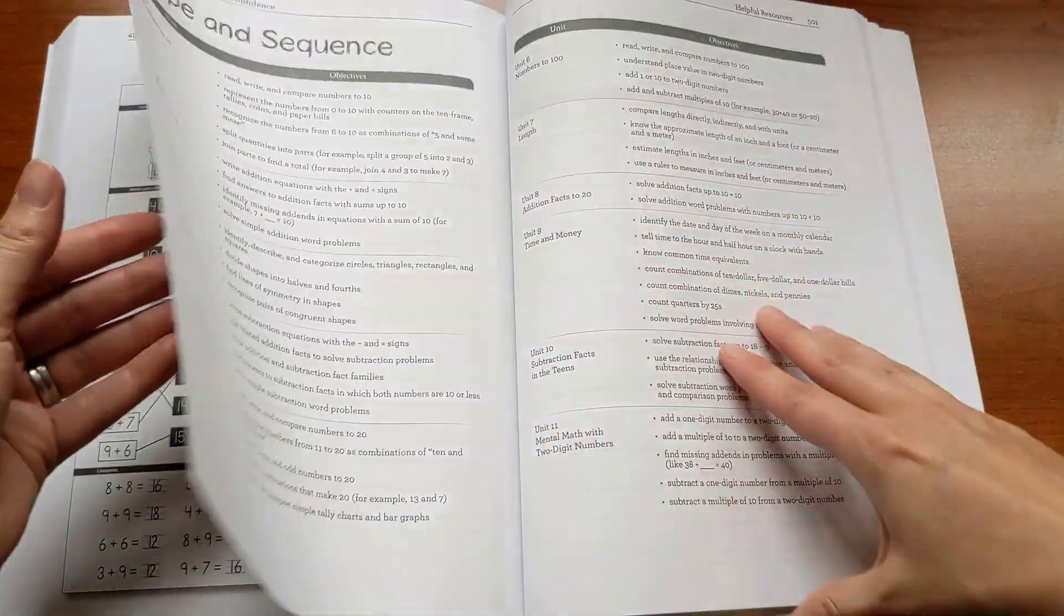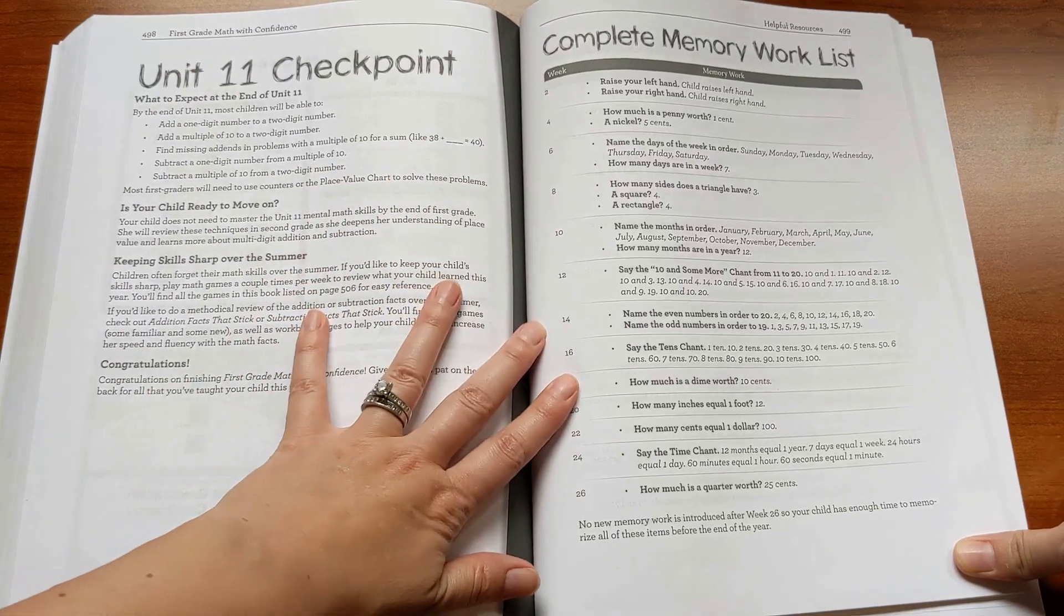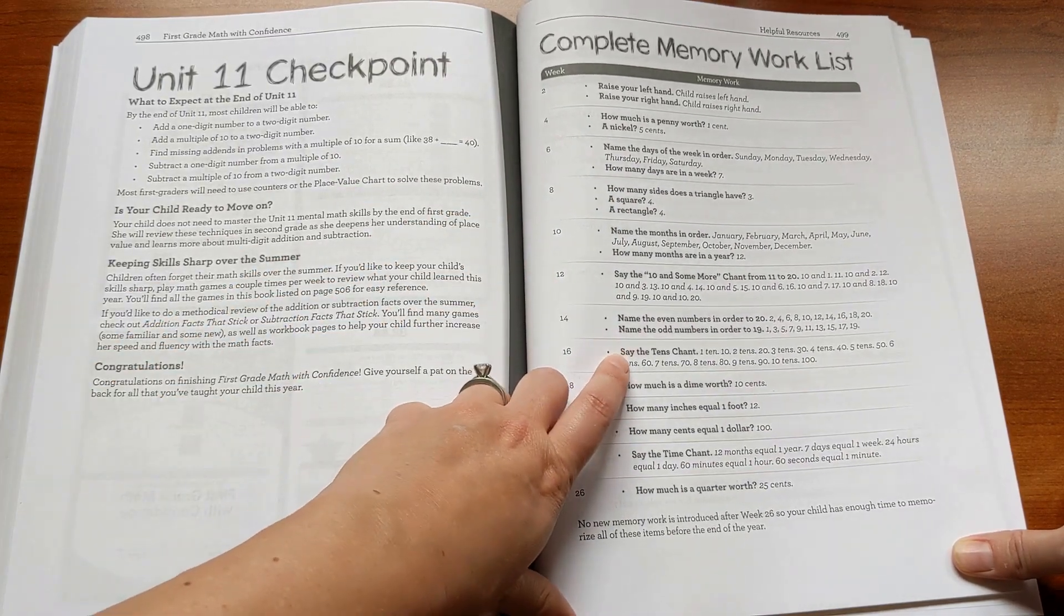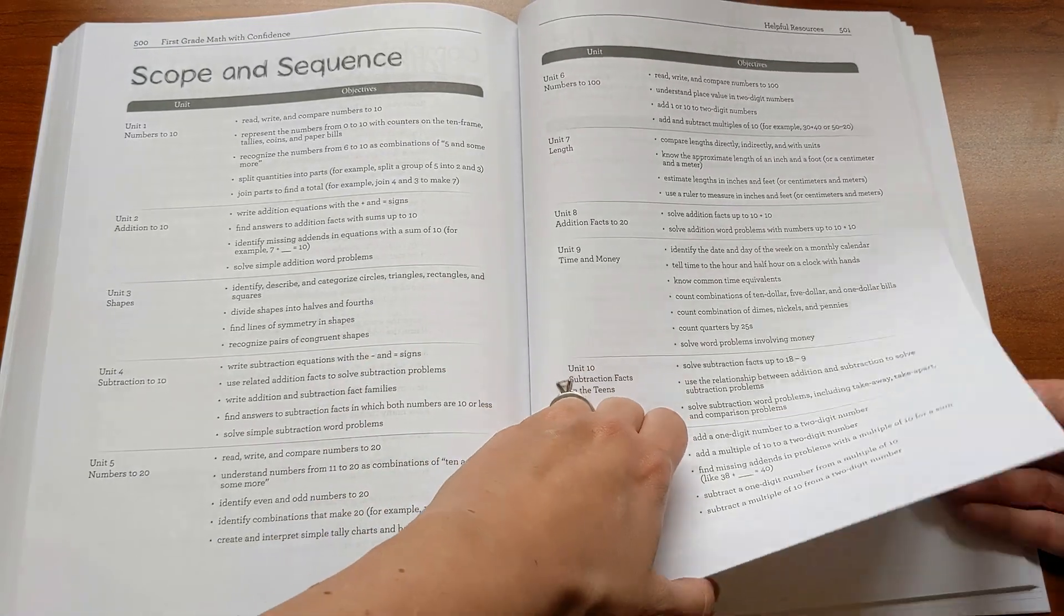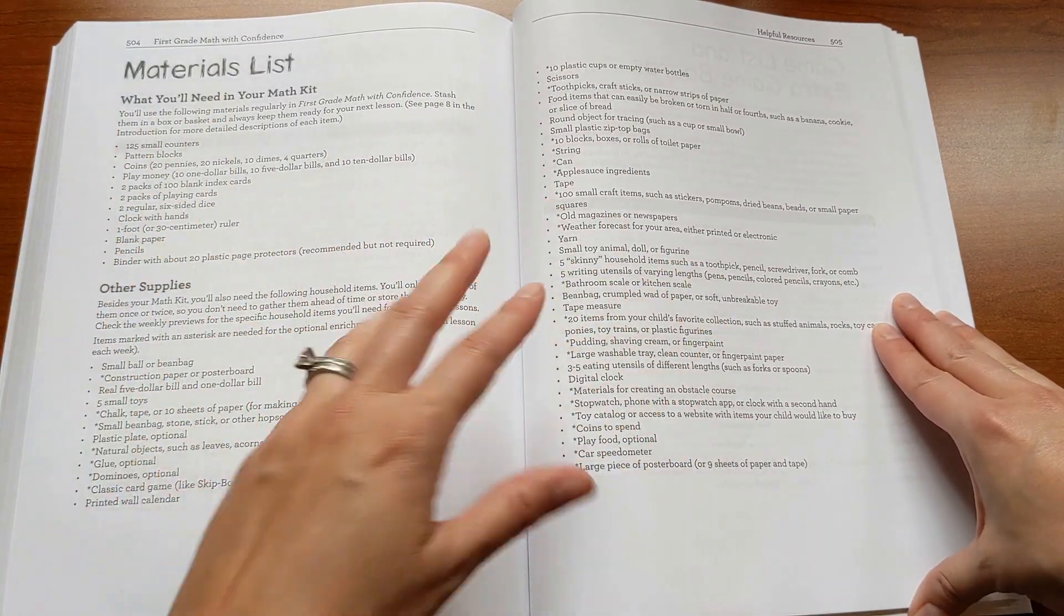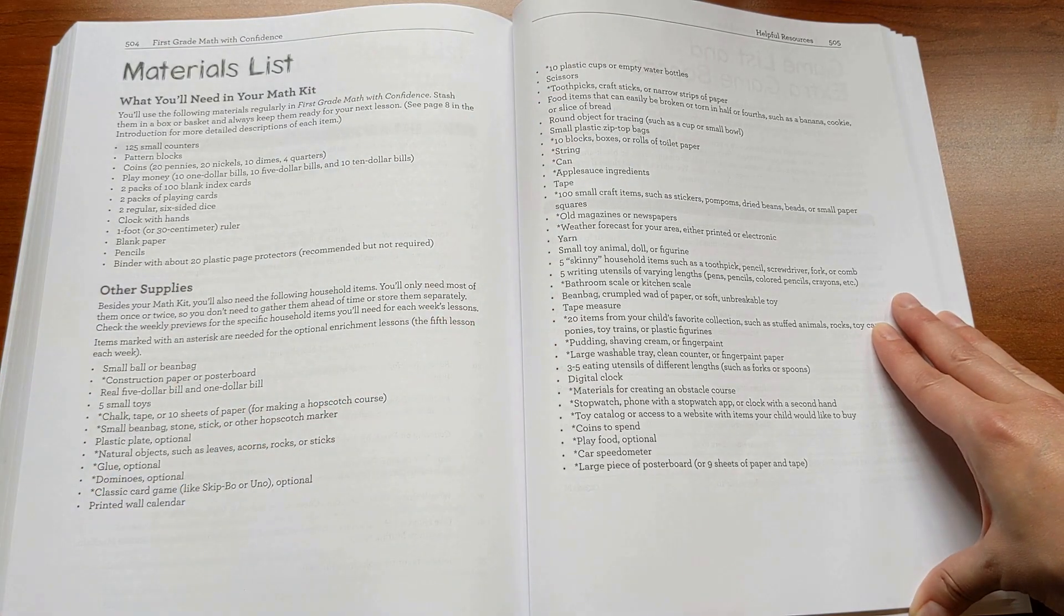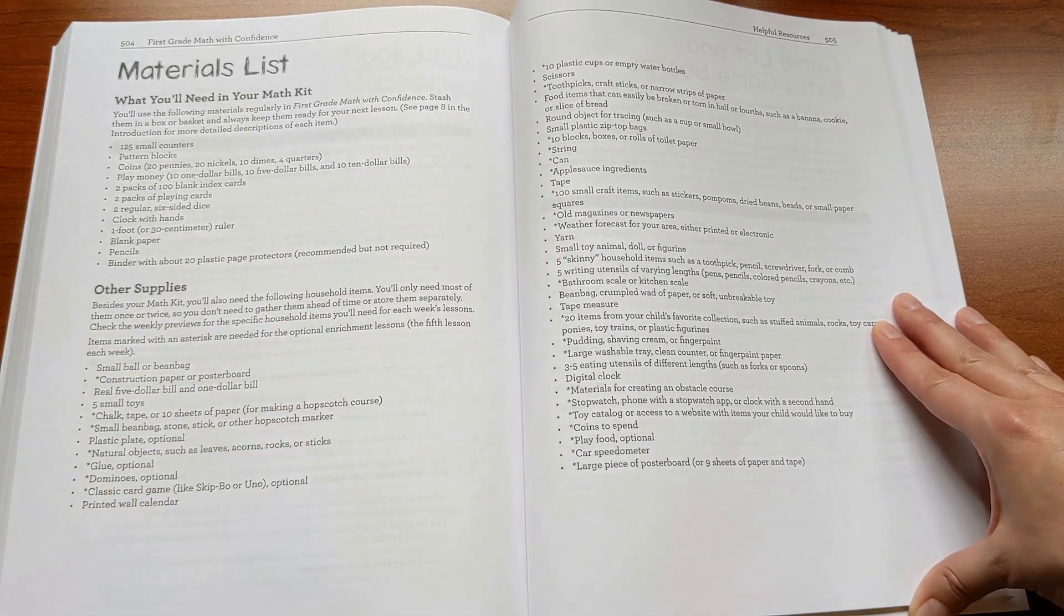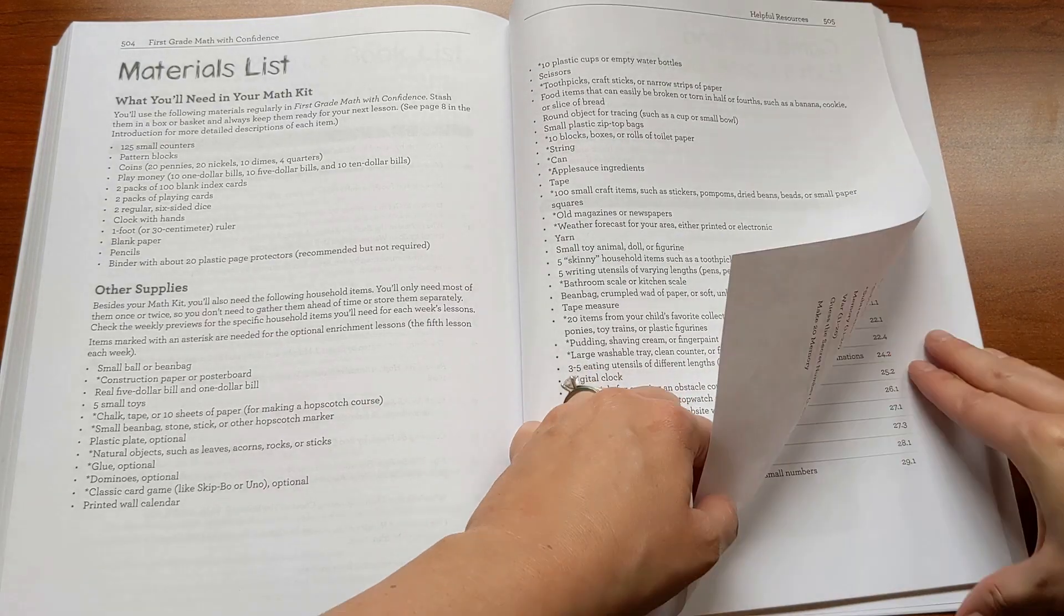There's 32 weeks in the program. And then at the end, there is a section called Helpful Resources where I put together lots of the lists that make it easier to teach that you can refer to. One thing that's included in the book is memory work, where your child will memorize some important facts about math - things like how many sides a triangle has, say the tens, one ten is ten, two tens is 20, how many cents equal a dollar. So that's all listed in the back. The full scope and sequence is back here, so you can refer to that. The complete picture book list in case you want to request books from the library. Full list of materials. This is what you need in your math kit. And then these are just the other kinds of random things that you might need throughout the year. Most of these are for enrichment lessons, so they're completely optional. But you will sometimes need things like tape or yarn or small toy, tape measure. These are all things you should probably already have around the house, so just don't be daunted by this list. It's really not a lot to gather. You don't need to get all ready in advance.